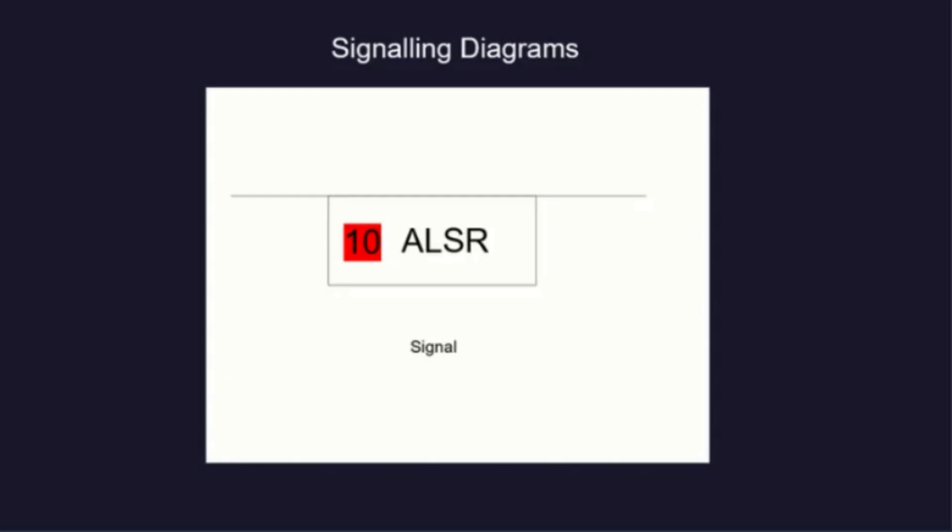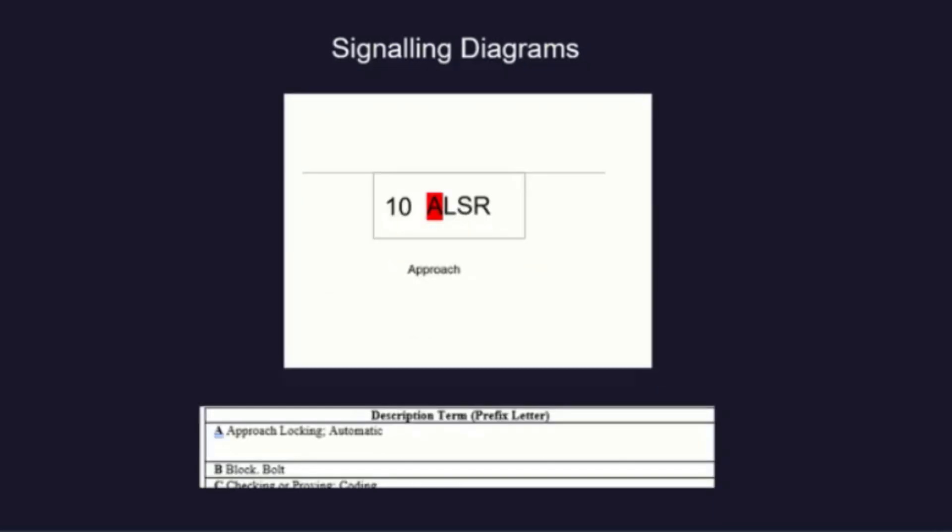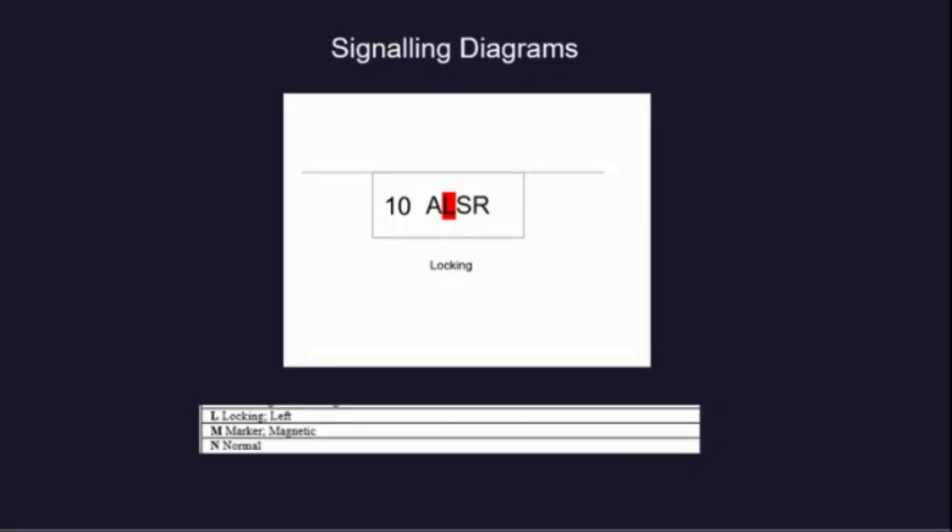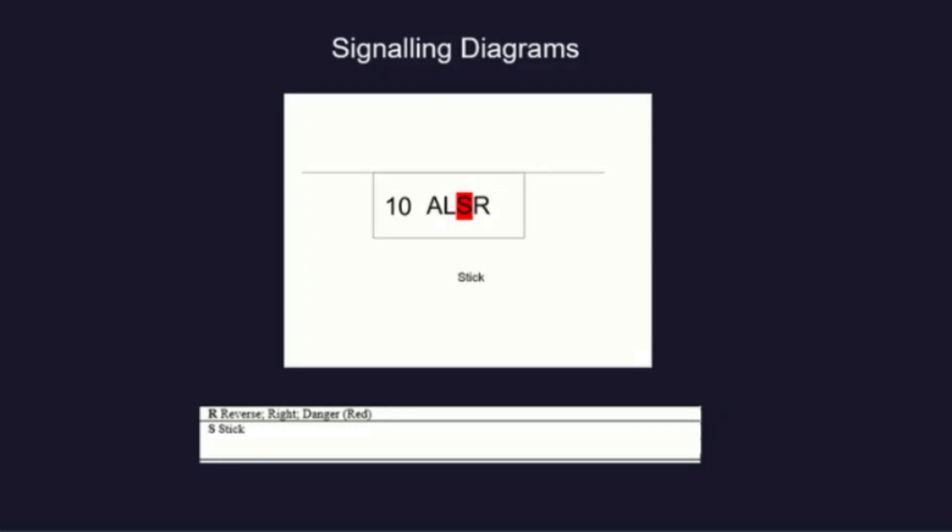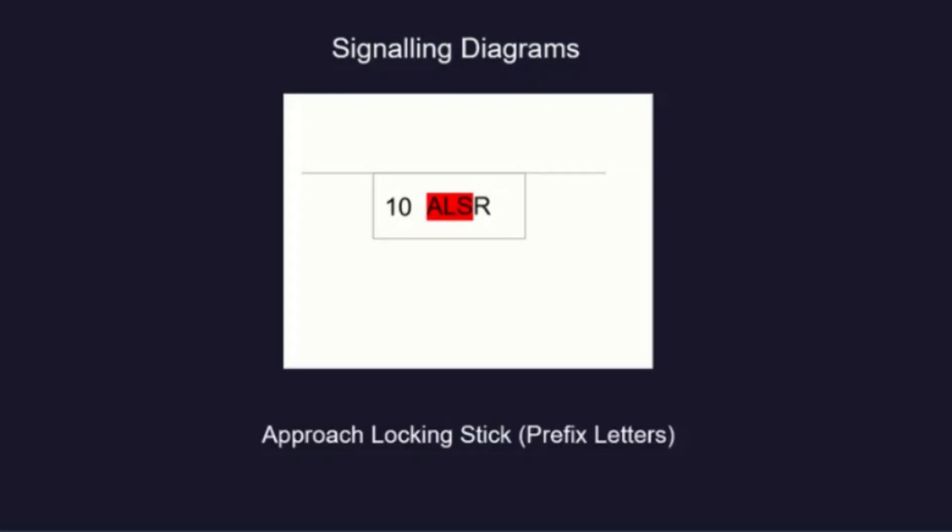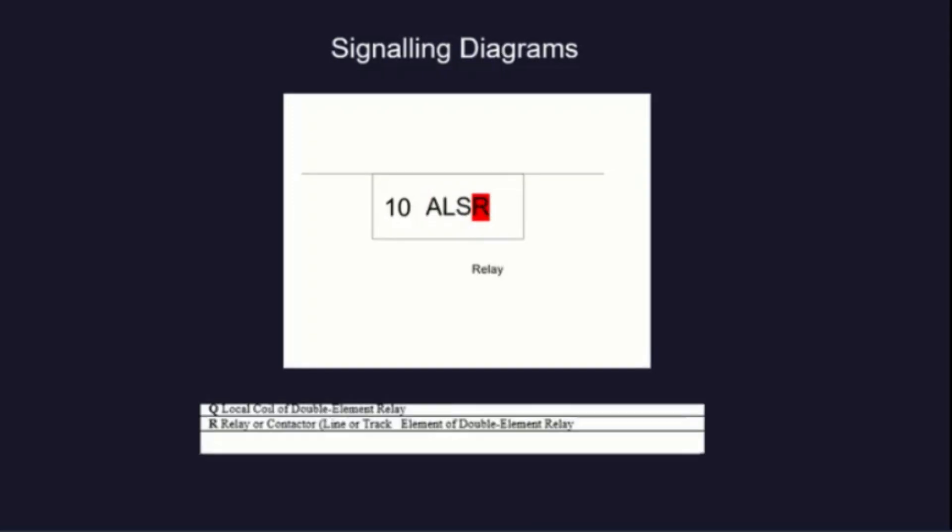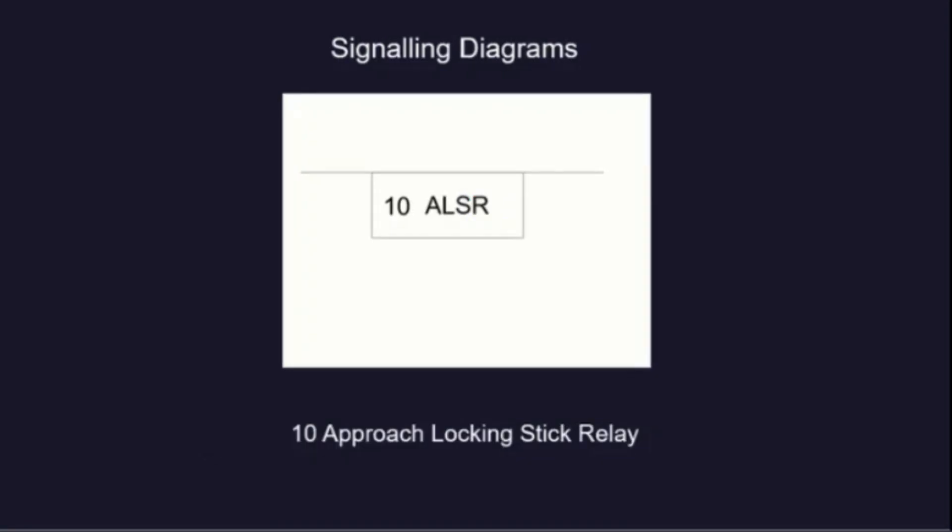10 in this case is a number of the signal lever. Looking at the code A means approach, L locking, S stick. So the preceding letters A, L and S give us approach, locking, stick. And the last letter R is relay. 10 approach, locking, stick, relay. Letter R being the last letter within the basic symbol makes the unit a relay.